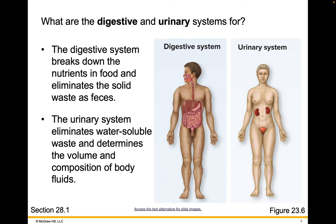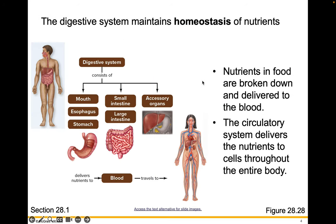So what is the digestive system for? The digestive system breaks down the nutrients in food and eliminates solid waste as feces. The digestive system maintains homeostasis of nutrients. Nutrients in food are broken down and delivered to the blood. The circulatory system delivers those nutrients to cells throughout the entire body.